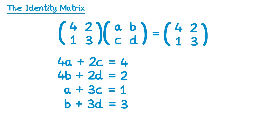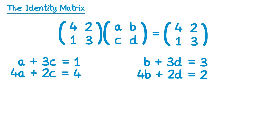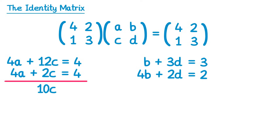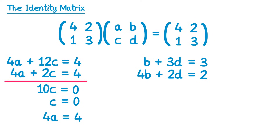What we have here is two sets of simultaneous equations. We'll solve the left ones first. If we multiply the top equation by four it becomes four a plus twelve c equals four, and then subtract the equations: four a minus four a is zero, twelve c minus two c is ten c, and four minus four is zero. So ten c equals zero, which means c equals zero. Substituting back into the bottom equation, four a plus two c is four, but c is zero, so four a equals four, meaning a equals one.